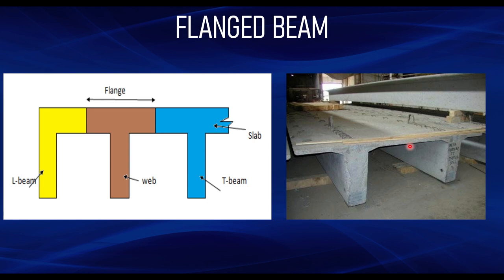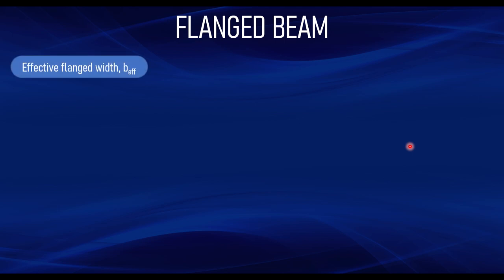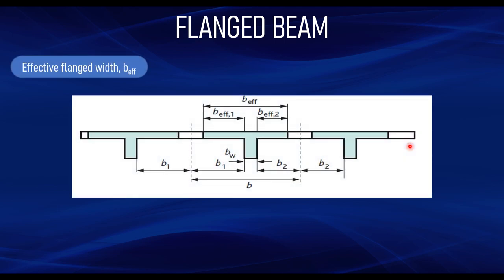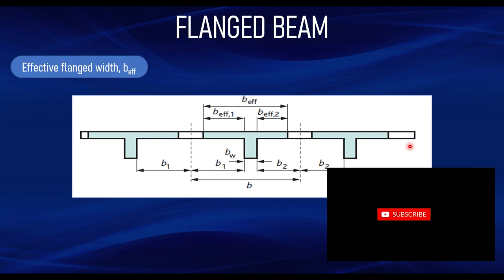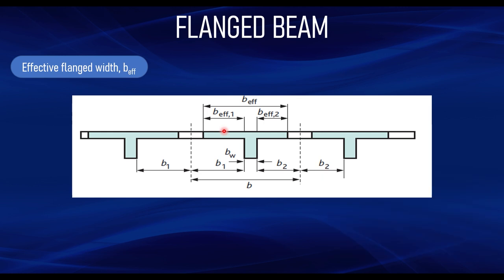The effective flange width is the part of the slab that contributes to resisting the load of the beam. Looking at a typical diagrammatic representation for a T beam, not the total part of the slab contributes to forming the flange. Theoretically we used to take the distance between the face of the support divided by two as the width of flange, but we need to determine the actual part of the width that contributes to resisting load — that is what is called the effective flange width, given as BEFF.